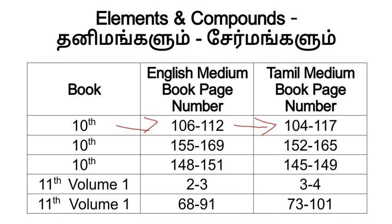For the 10th book, Carbon and Its Compounds: English Medium book is page 155 to 169, Tamil Medium book is page 152 to 165. For the pH scale topic: English book is page 148 to 151, Tamil Medium book is page 145 to 149.